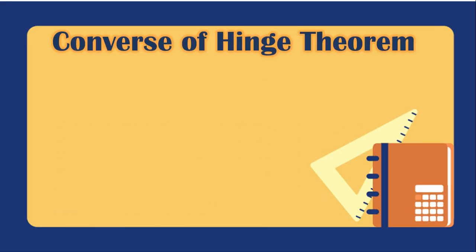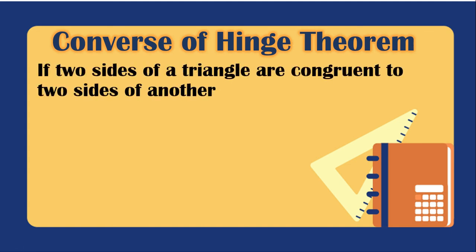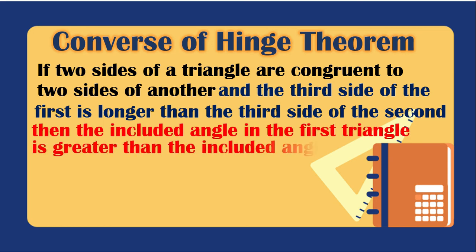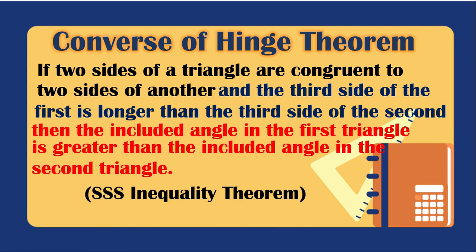Now let's have the converse of the hinge theorem. If two sides of a triangle are congruent to two sides of another, and the third side of the first is longer than the third side of the second, then the included angle in the first triangle is greater than the included angle in the second triangle. We will just reverse the hinge theorem. It is also called the SSS Inequality Theorem.